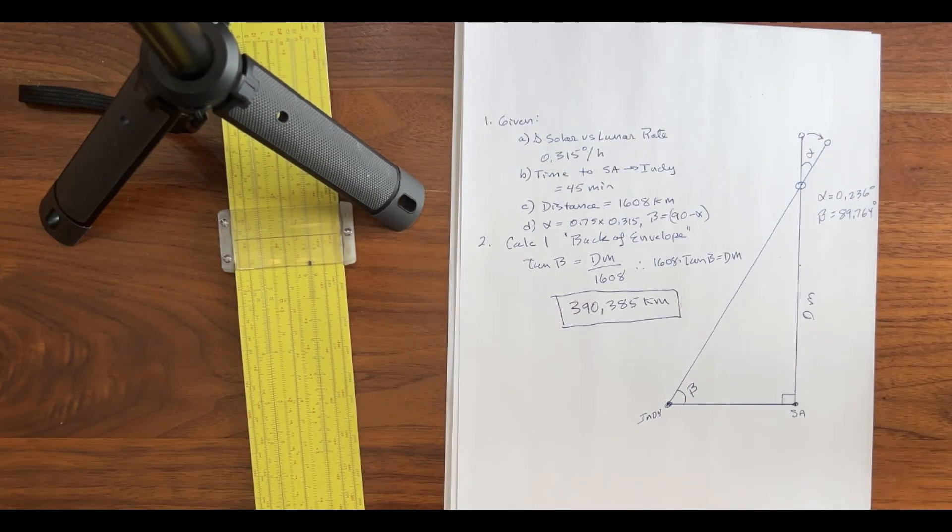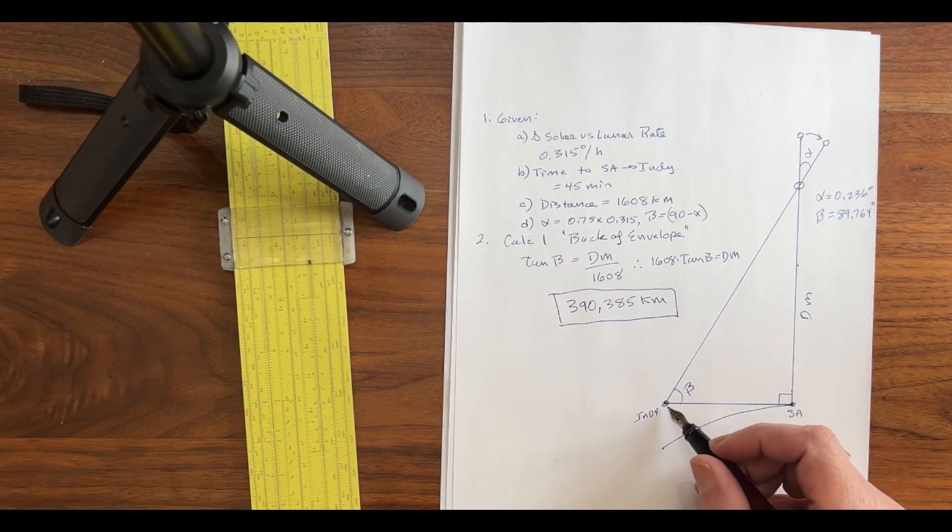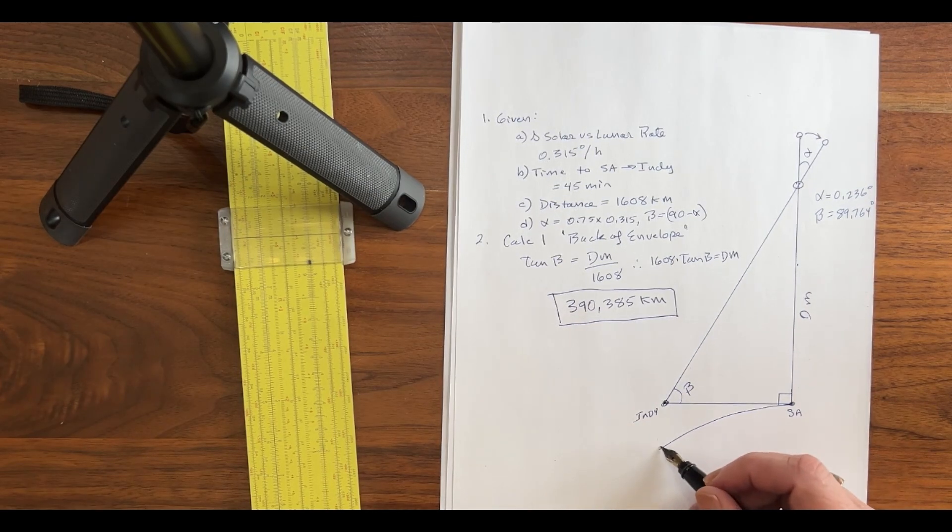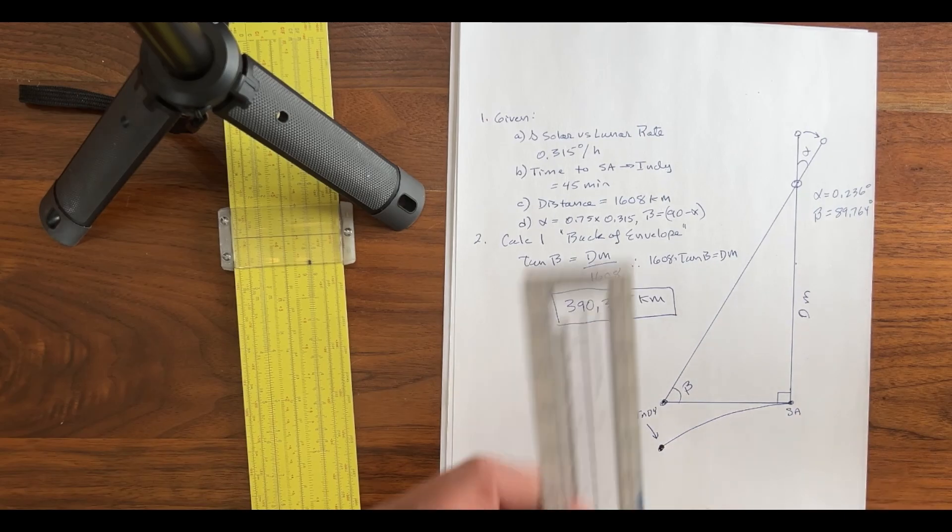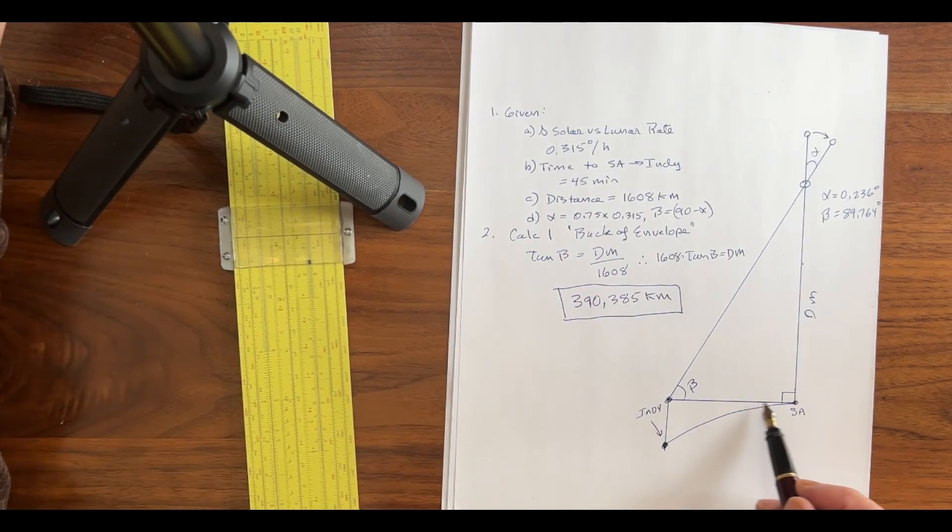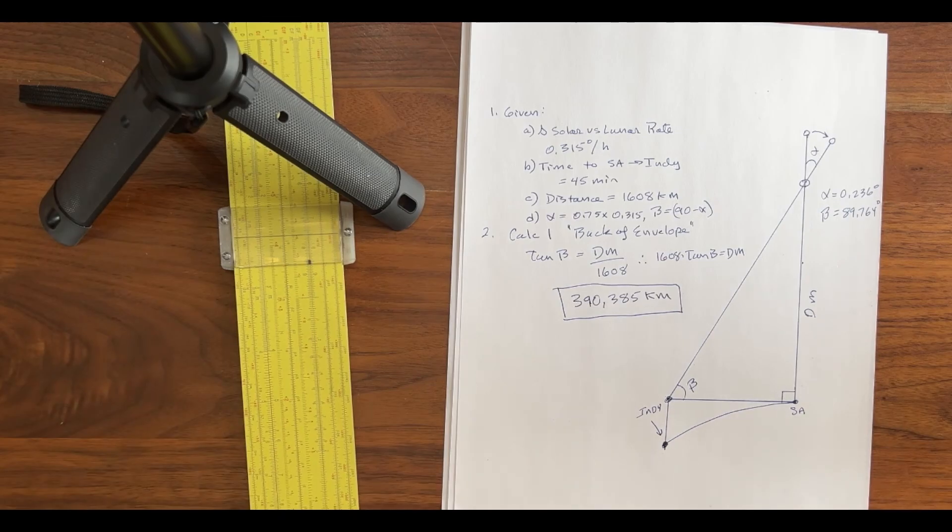You see, ladies and gentlemen, we seem to have forgotten something. The surface of the Earth is curved. Indianapolis is not here. It's down here. So, what we need to do, we need to figure out this distance. We know this distance is 1608, but we need to know what that distance is. Well, how can we get it?